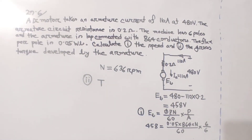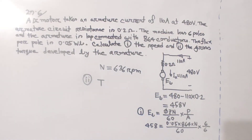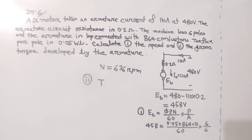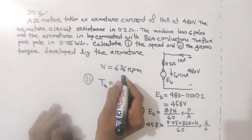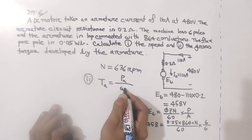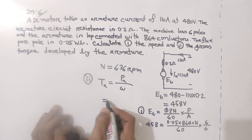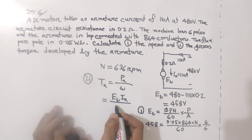The armature torque Ta equals armature power divided by omega. Since armature power Pa equals back EMF Eb multiplied by armature current Ia, we have Ta = (Eb × Ia) / omega. Omega equals 2π × N divided by 60.